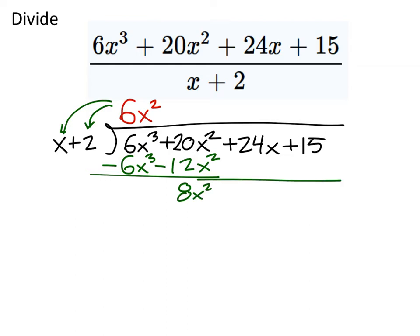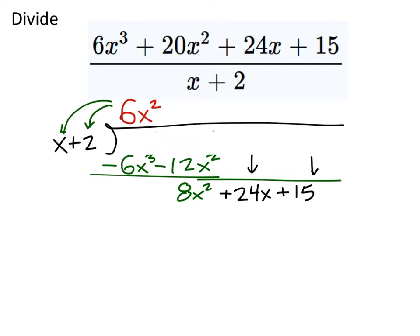Since that's positive, I'm going to take it away. So what I end up with is this 8x squared. And actually, I'm going to extend that a little bit, because I need to drop my 24x and my 15 as well. Now I've got a trinomial. Just ignore this stuff. Ignore the original expression now, because we have a new expression to work with. And that is 8x squared plus 24x plus 15.